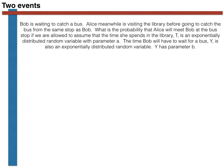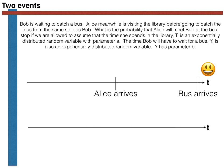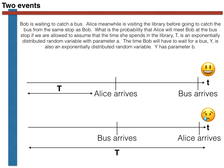We are told that Alice arrives after an amount of time given by a random variable called T. Furthermore, we are told that the bus arrives after an amount of time given by a random variable called Y. As the figures make clear, if T is less than Y, then Alice meets Bob at the bus stop. If, by contrast, Y is less than T, then they do not meet.